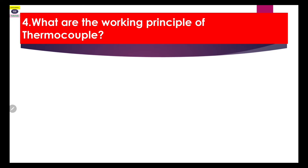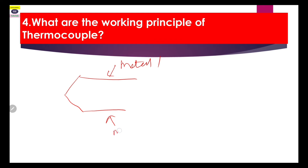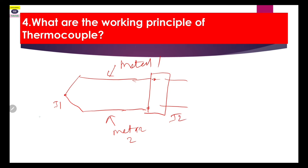The fourth question is: what is the working principle of a thermocouple? A thermocouple is a device which has two dissimilar metals — metal one and metal two — forming two junctions: J1 and J2. J1 is called the hot junction and J2 is called the cold junction.